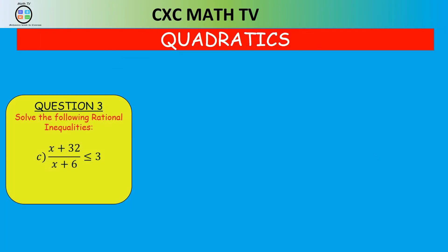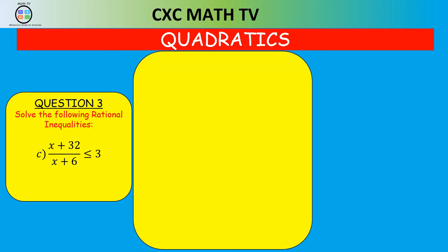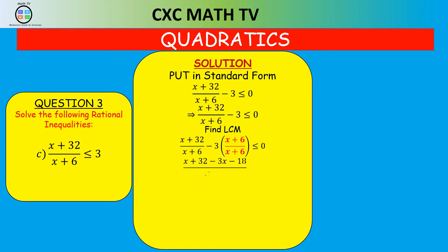Pause and attempt question three. This one is not in standard form, so we want to get it into the form Y less than or equal to zero. Subtracting three from both sides gives X plus 32 over X plus six minus three, less than or equal to zero. Writing it as one fraction over the LCM gives X plus 32 minus 3X minus 18, over X plus six, which simplifies to 14 minus 2X over X plus six, less than or equal to zero.